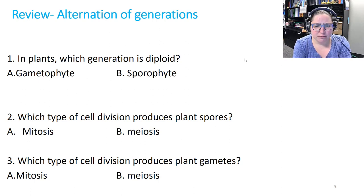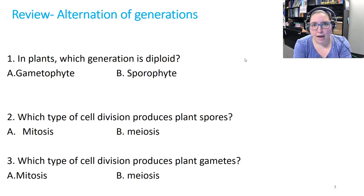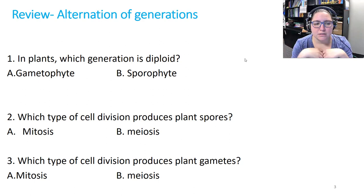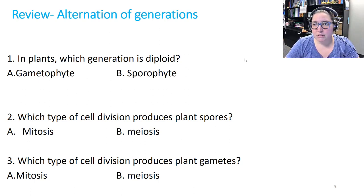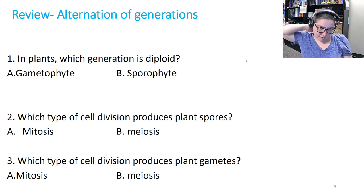Number three: which type of cell division produces plant gametes — mitosis or meiosis? The gametophyte produces gametes. The gametophyte is haploid, and gametes are haploid. To go from haploid to haploid, you do mitosis. So number three is A. That's a little tricky because in animals, gametes are produced by meiosis since diploid animal cells are making haploid sperm or egg. But in plants it's mitosis.